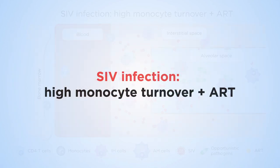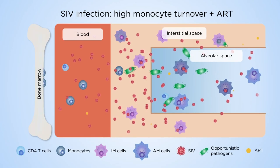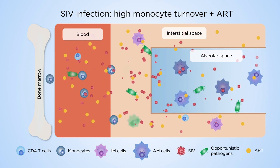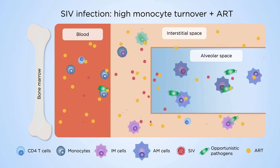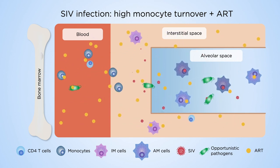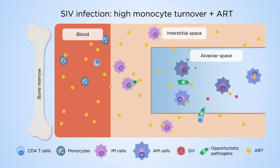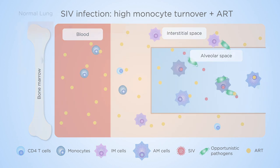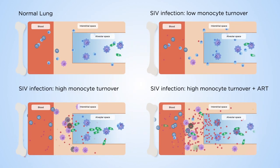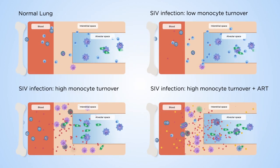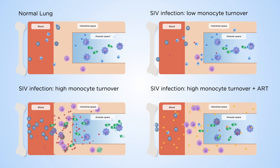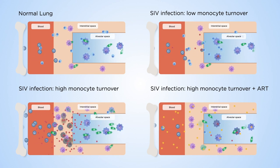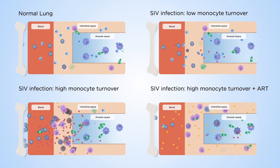Anti-retroviral therapy initiated at this stage inhibits HIV infection in interstitial macrophages, but not in alveolar macrophages, which continue to release virus. Thus, alveolar macrophages may become a virus reservoir. Therefore, complete removal of HIV must target both T cells and macrophages.